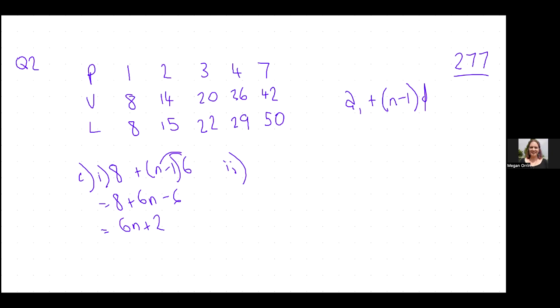Part two is about the lines. So again, oh no, sorry, I'm lying. That's D. Part two is asking us what is the 23rd pattern? So I'm just going to use my rules. Six times 23 plus two. And if I work that out, it's 140, which means there are 140 vertices in the 23rd pattern.